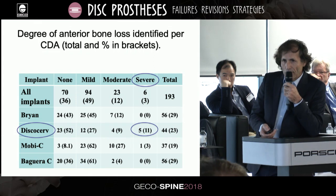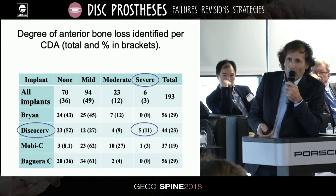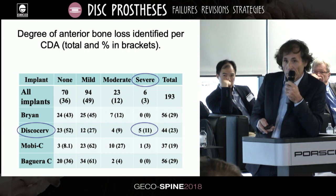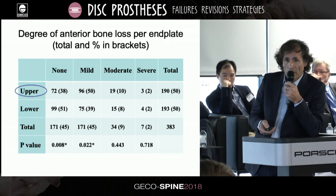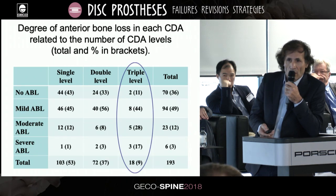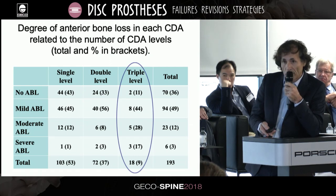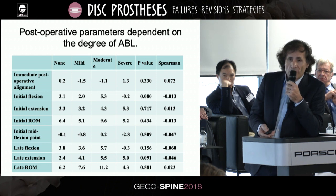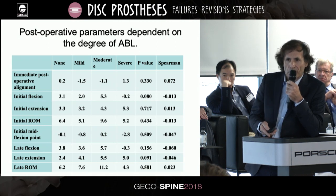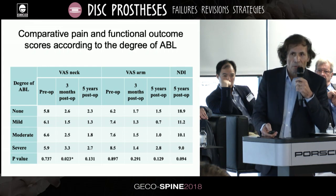We also observed ABL on all prostheses, but only severe ABL on the Discocerp. The upper implant is more commonly involved. Multi-level CDA increases the risk of ABL and increases the risk of severe ABL. There is no influence on long-term range of motion, but ABL increases the risk of spontaneous fusion. There is no correlation between degree of ABL and clinical outcomes.